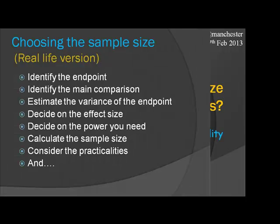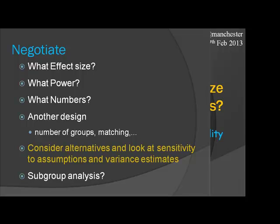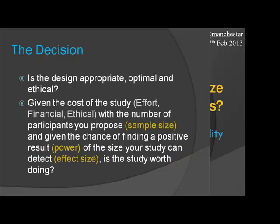In practice, you identify your endpoints, your main comparisons, your variances, effect sizes, and required power, then calculate the sample size — and then consider practicalities and negotiate. Because you might find the number doesn't make sense, or it's not practical. You ask the question again: what effect size do we want? Would we be happier with less power, or do we want more? Could we do something with a different design or different endpoints? Do we want power to look at certain subgroups? So you consider the alternatives, think about your assumptions, go up and down, play around, and come to a decision.